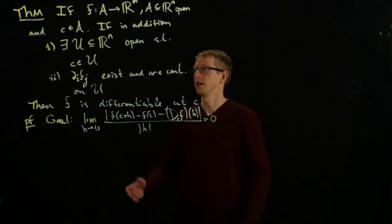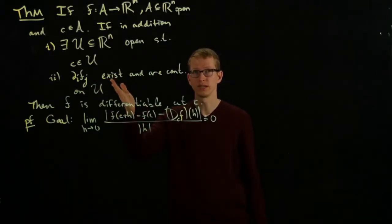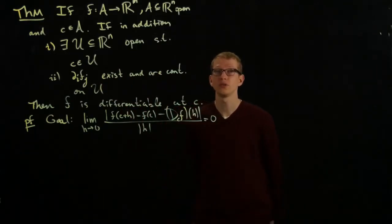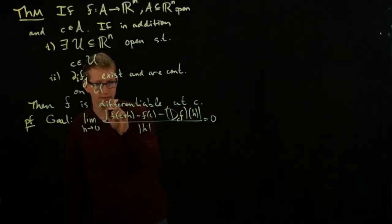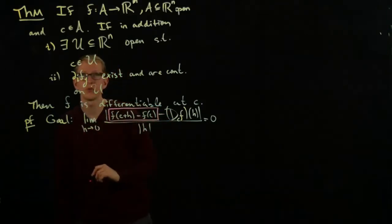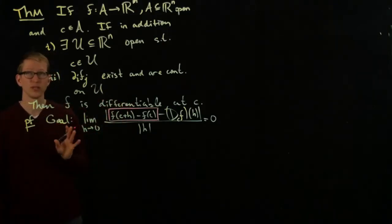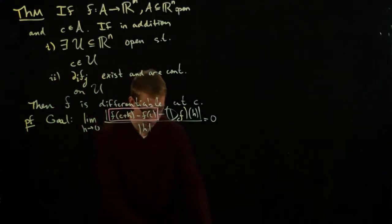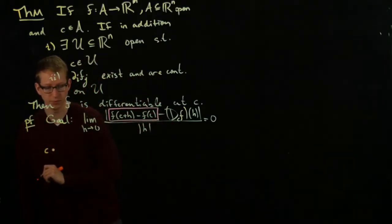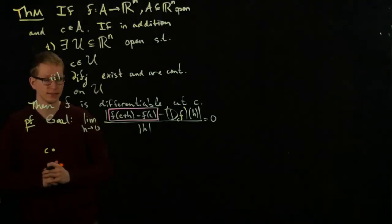It will turn out that we use in a crucial way the fact that the partial derivatives not only exist — which we know is not enough — but are continuous on some open domain containing C. So we will rewrite this expression using the mean value theorem multiple times. Pick any point C. Because C is in an open domain, there's some rectangle that contains C and is also contained in A.